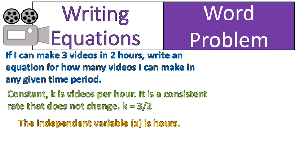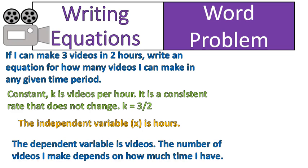The independent variable, x, is the number of hours. This is something that can change independently, and it will force the other item to change. But if the other item, the number of videos changes, it doesn't force the time to change as well.